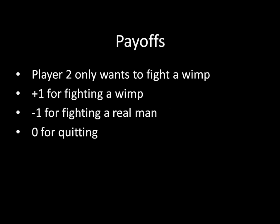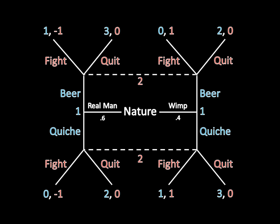Player two is a coward. She only wants to fight a wimp, and she gets one point for doing so. She also loses a point for fighting a real man, and receives zero for quitting. Putting that all together, we get this game here.